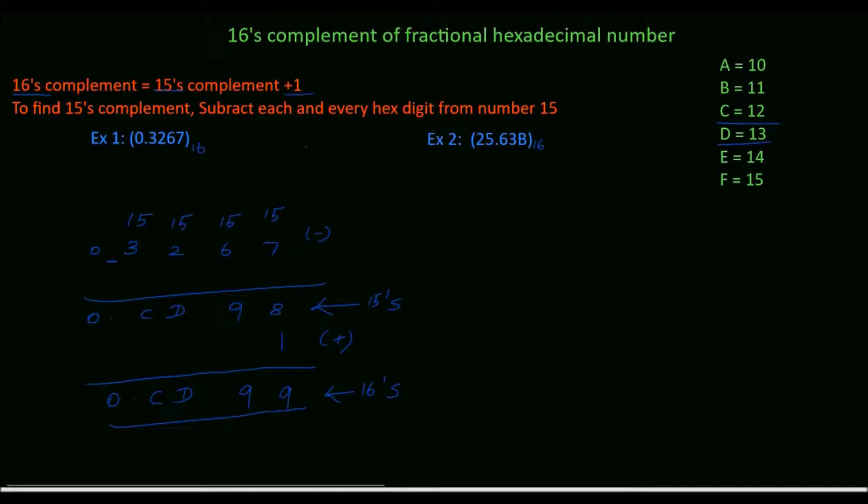Next, we will solve example 2. The given hexadecimal number is 25.63B. First, we will find 15's complement. Subtract the digits from 15.